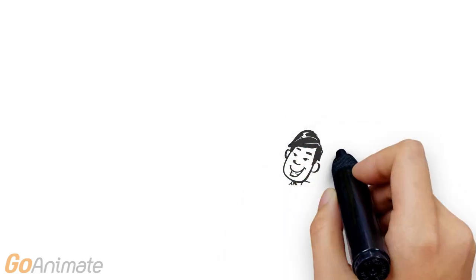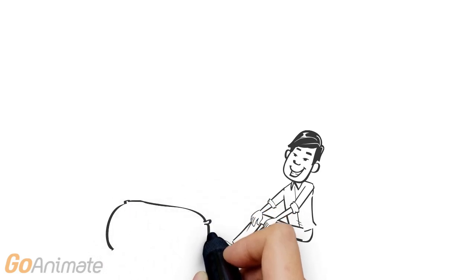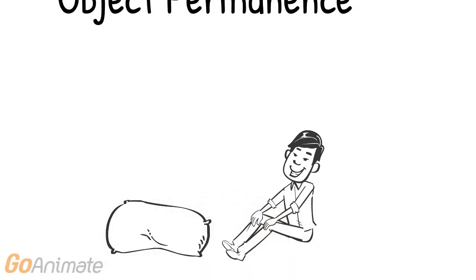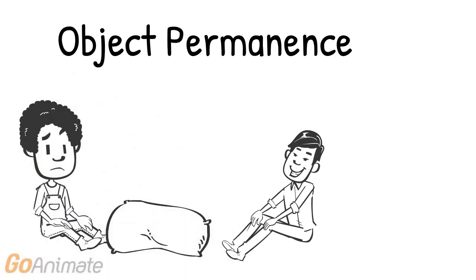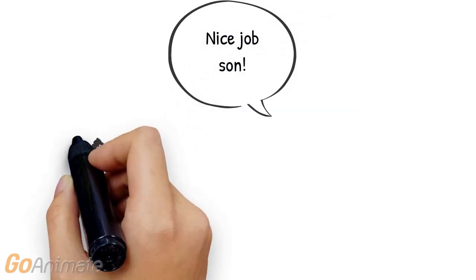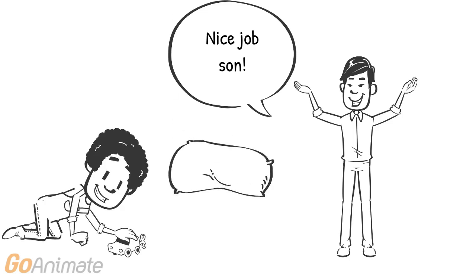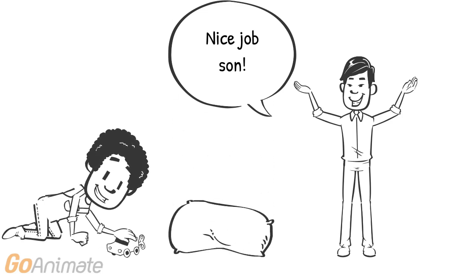If Jack's dad puts his favorite toy car under a blanket, will Jack know to remove the blanket to get his favorite toy, or will he just sit there confused? If Jack knows to remove the blanket to get his toy, he will have established object permanence. Object permanence is important for the child's transition from the sensorimotor to the preoperational stage, because the child realizes that objects can exist in the environment without being seen.